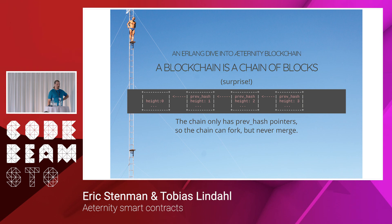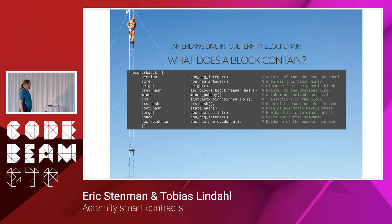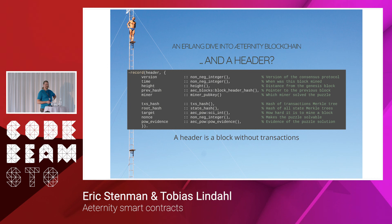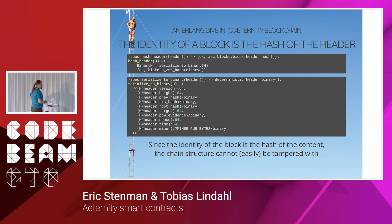Since you only have previous pointers, you can fork but you cannot merge again. So what is in a block? This is the Erlang record for the block representation — there's a bunch of stuff and I'll walk you through it. The header is the same thing as a block but it doesn't have transactions. The identity of a block is the hash of the header — you take all the parts of the header and hash it with a cryptographic hash function. We use Blake2b 256-bit hash to represent the block.